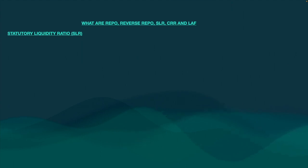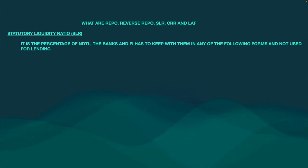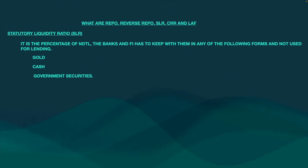Now coming to Statutory Liquidity Ratio. SLR is again a percentage of net demand and time liability that banks and financial institutions have to keep with themselves — not with the RBI but with themselves. They can keep it in the form of government securities, government bonds, cash, or gold, but it should never be used for lending. Government securities should not be traded, gold should not be traded, and cash should not be lent to anybody.